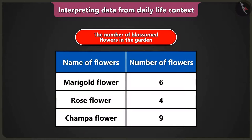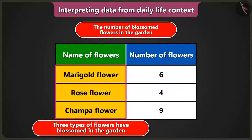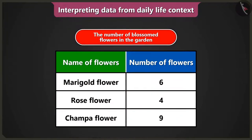There are two columns in the table. In the first column, the blossomed flowers in the garden are written. The names of the flowers are marigold flower, rose flower, and chumpa flower. From this data, we can know that three types of flowers have blossomed in the garden: first is marigold flower, second is rose flower, and third is chumpa flower.